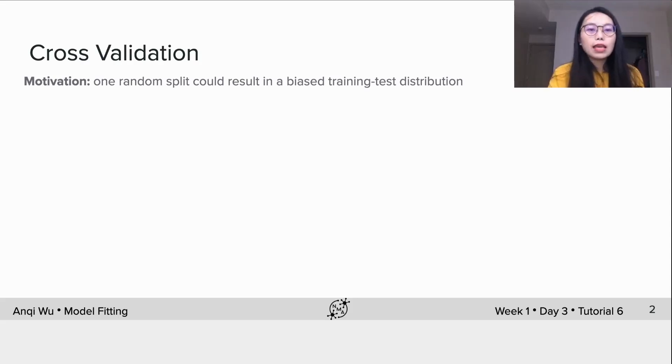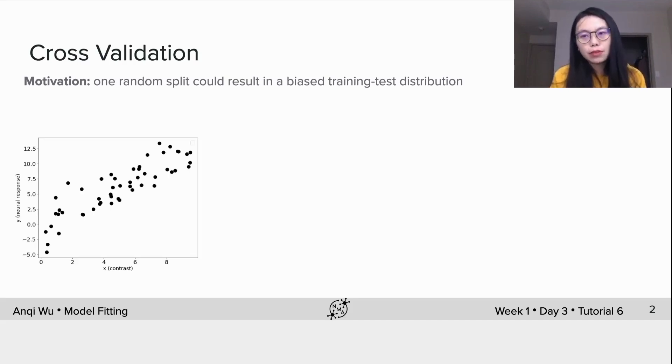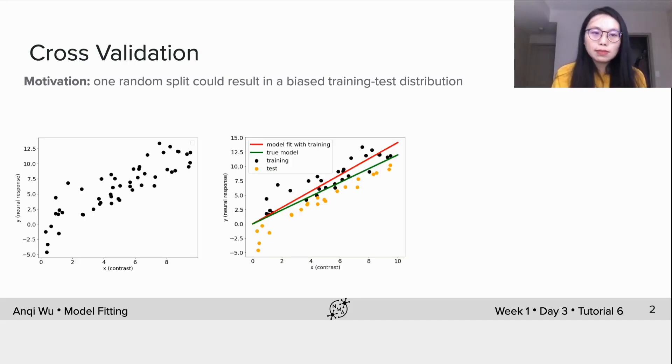However, in many cases, one random split could result in a biased training and test distribution. For example, here's a full data set, and then we do one random split, and we might get a split like this.